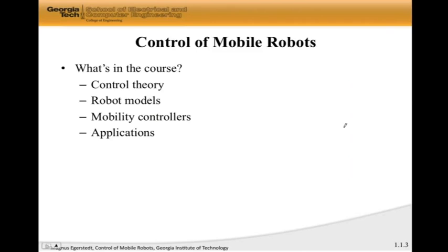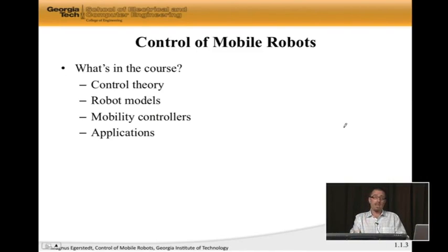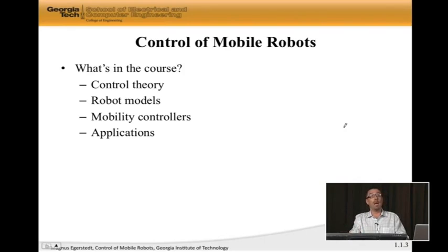What we are going to do in the course is develop control theory, which is this general mathematical framework for making systems do useful things. Then we're going to take robotics as the main application domain, and we're going to couple robot models and robot problems to what we develop on the control theory side. That's going to result in a number of different mobility controllers, and we're also going to discuss a plethora of different application domains found in robotics where our controllers are useful.